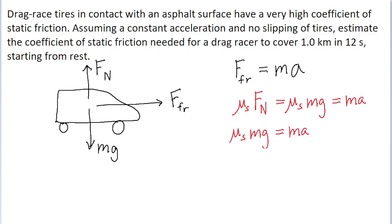Then notice that the masses will cancel out. And then solving for the coefficient of friction by dividing both sides of the equation by g, we can see that the coefficient of static friction is equal to the acceleration divided by the gravitational acceleration.